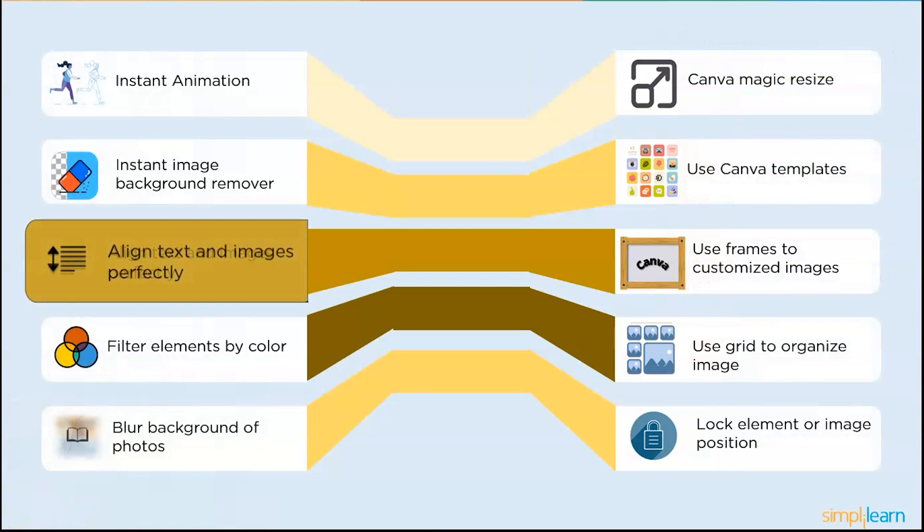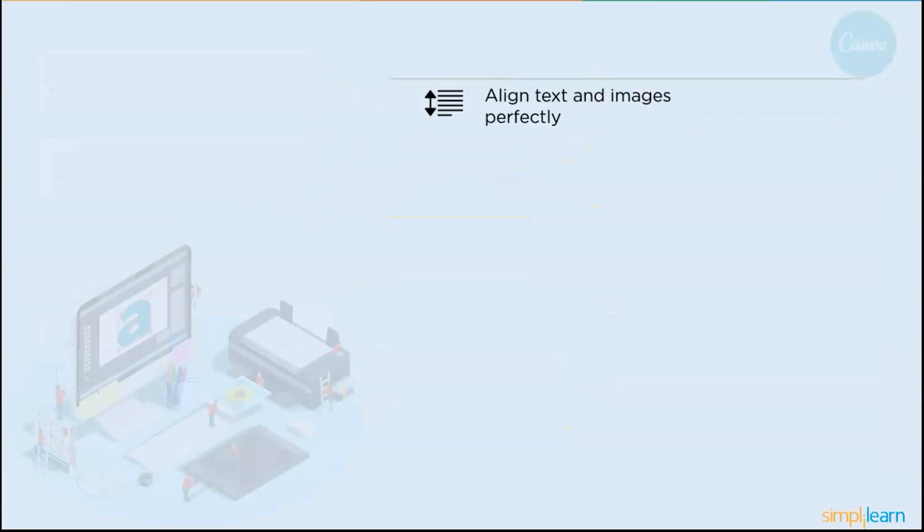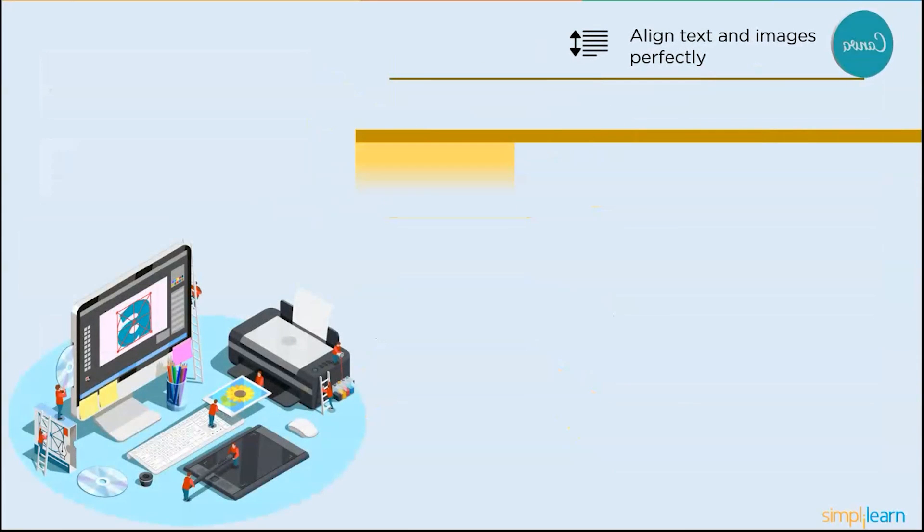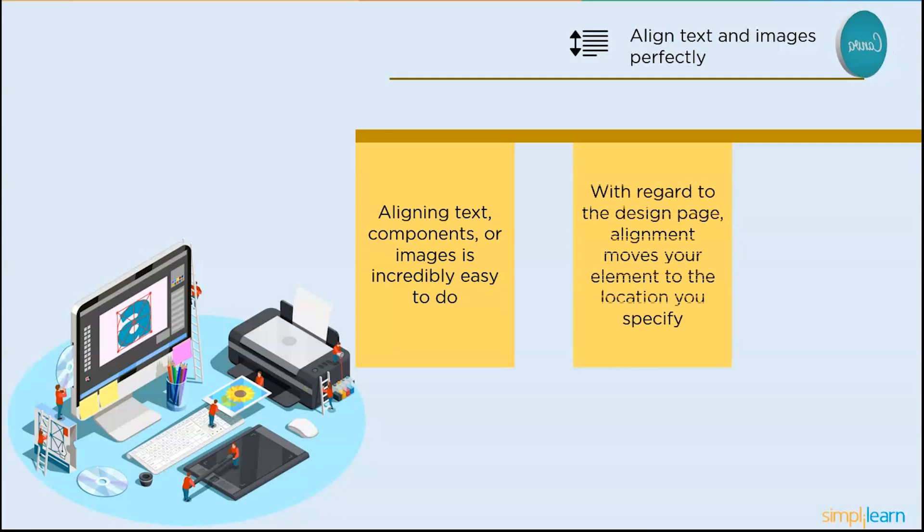And the next one is align the text and the images perfectly. Aligning text components or images is incredibly easy to do with Canva. You may quickly use the alignment tools to align and organize the text and the pictures instead of manually positioning each object or relying on visual approximations. With regards to the design page, alignment moves your element to the location you specify.